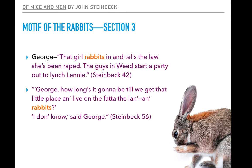In section three, it starts to shift and takes on a more negative tone. George is talking to one of the ranch hands, describing the girl that got him in trouble up in Weed: 'That girl rabbits in and tells the law she's been raped. The guys in Weed started a party out to lynch Lenny.' Here the word 'rabbits' describes how she moved — but in a negative way, representing something that stops them from achieving their dream. Later, Lenny asks George, 'How long is it going to be till we get that little place and live on the fat of the land and rabbits?' George says he doesn't know — so it's no longer certain it will happen. He's not really sure when, and no longer convinced they'll actually achieve the dream.